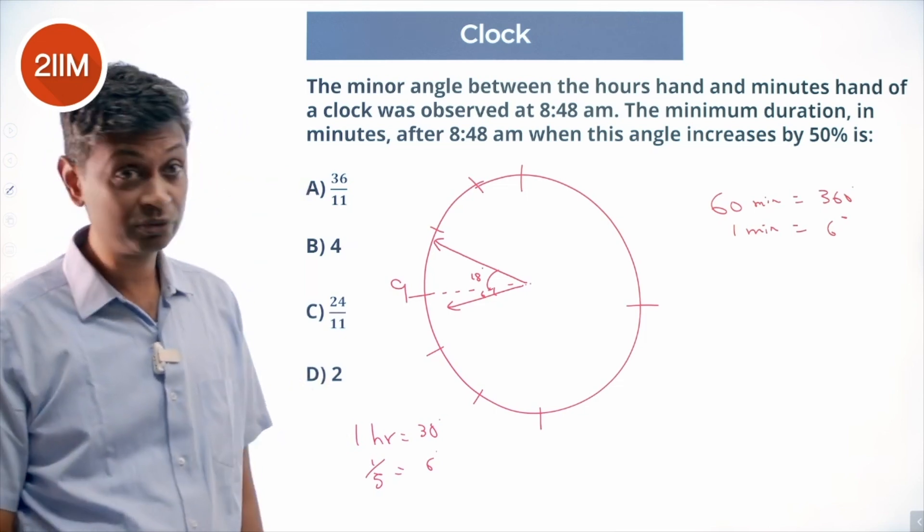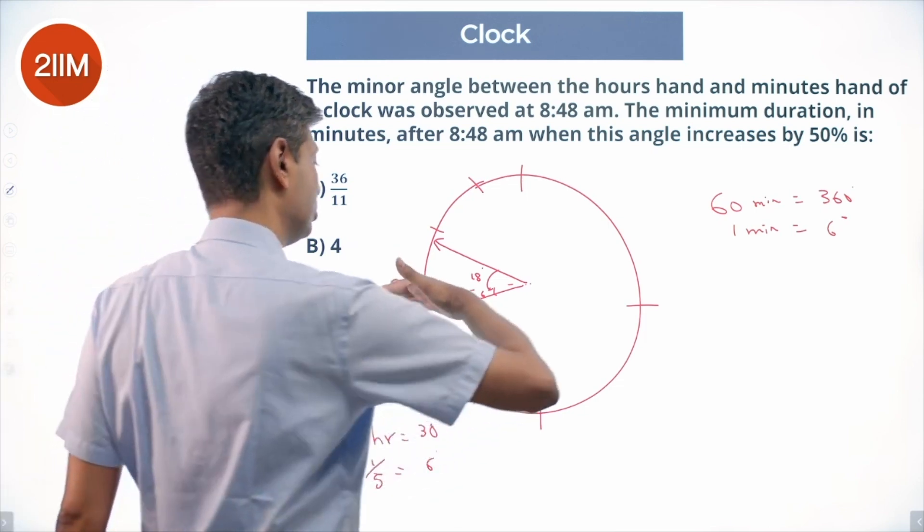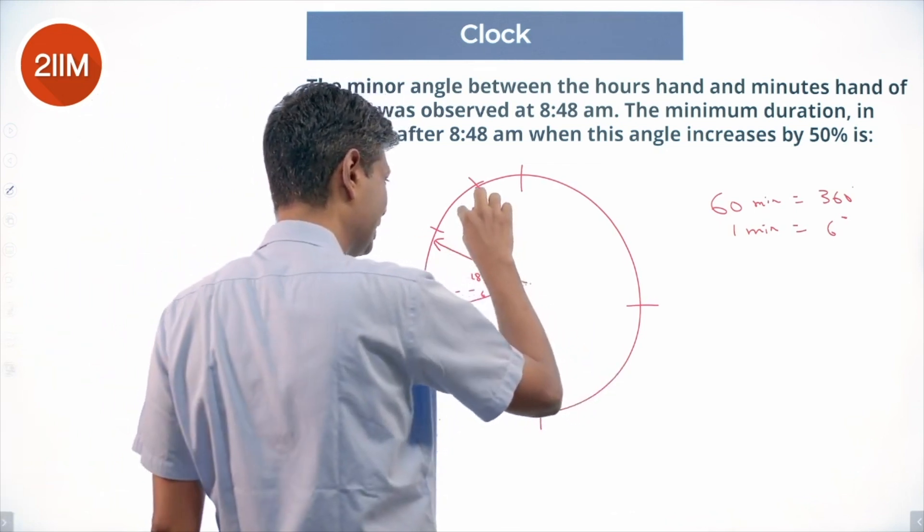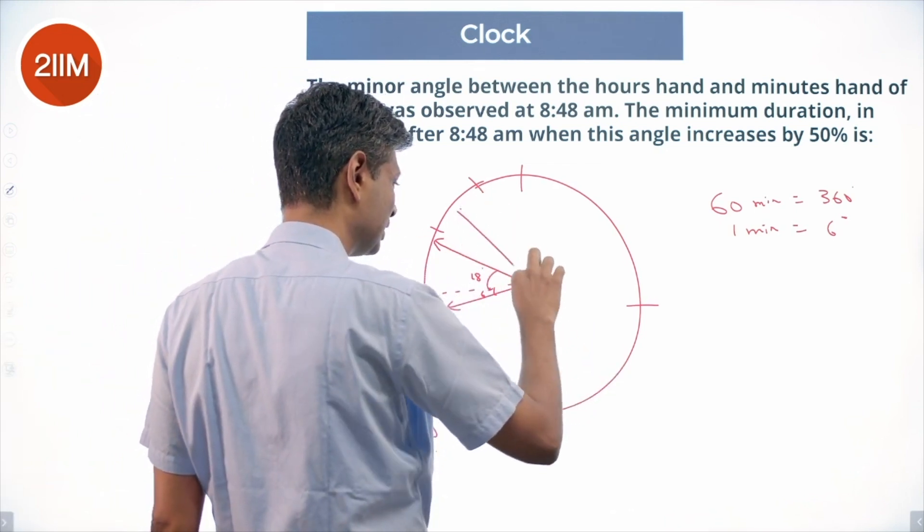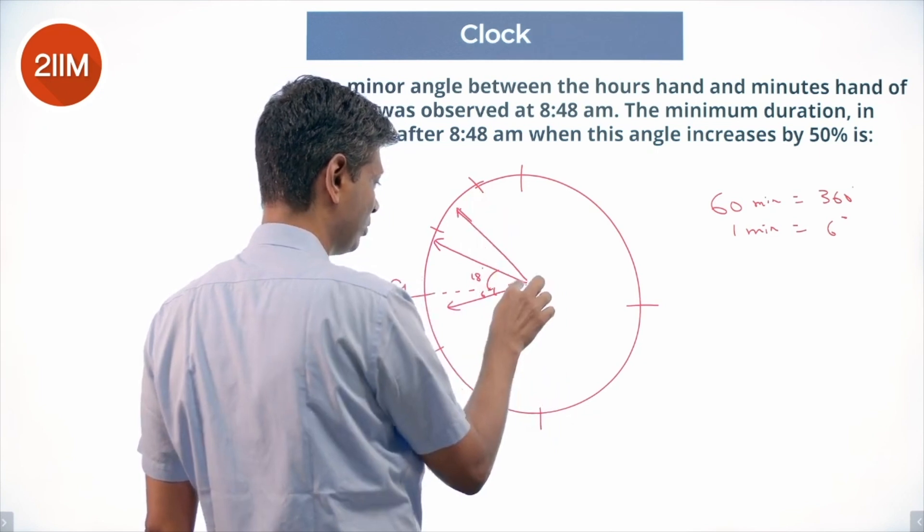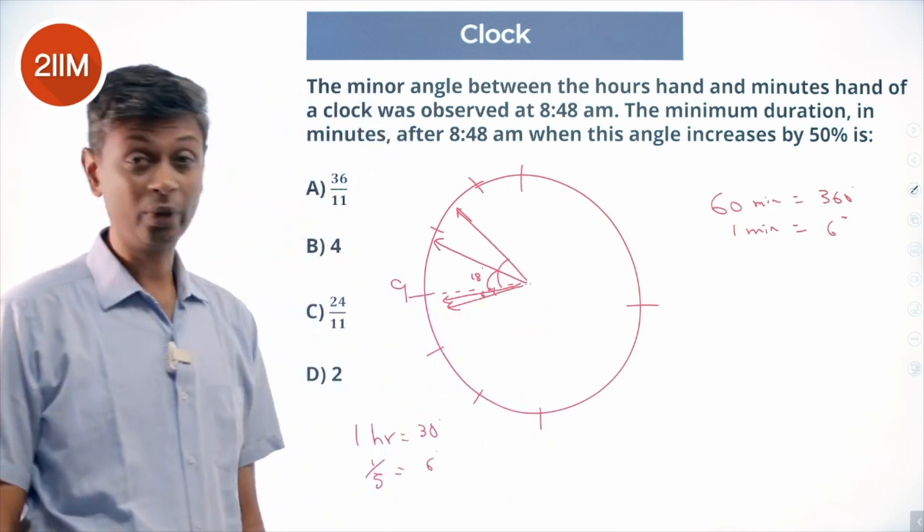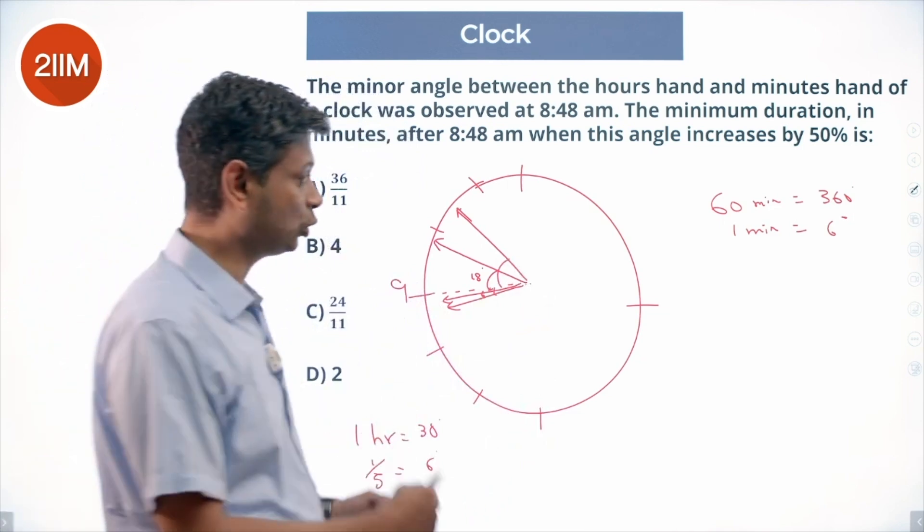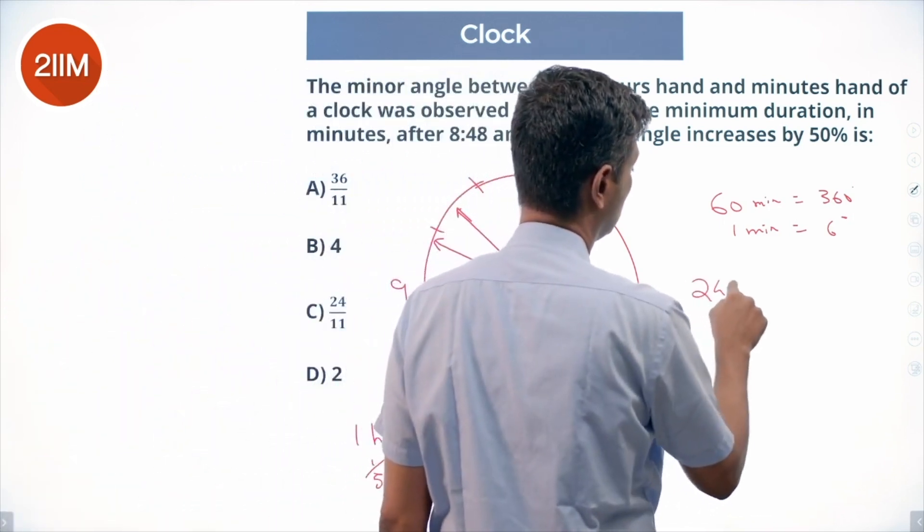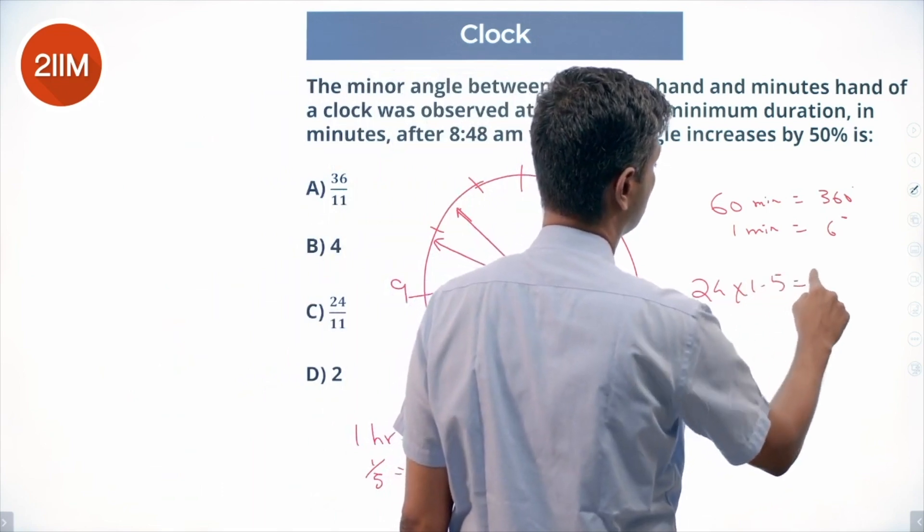When the angle increases by 50 percent, so the minute hand will keep going somewhere here. The hour hand would have gone even further away. That is at this angle. It is not 24 degrees, it is 24 times 1.5 which is equal to 36 degrees.